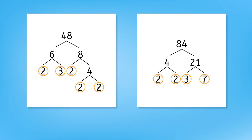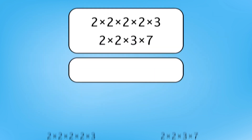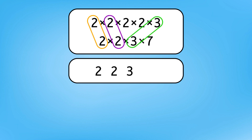Here are my factor trees. I found the prime factorization of 48 to be 2 times 2 times 2 times 2 times 3. And the prime factorization of 84 is 2 times 2 times 3 times 7. To determine the greatest common factor of 48 and 84, we need to compare their prime factorizations. 48 and 84's prime factorizations have a 2, another 2, and a 3 in common.